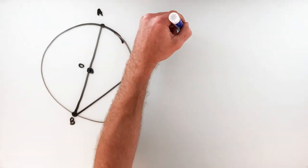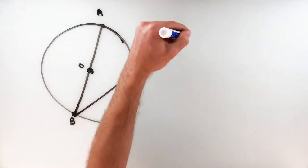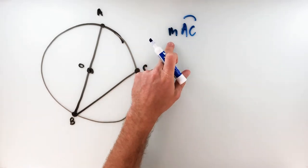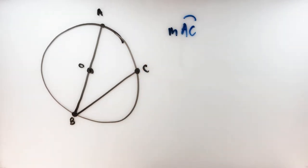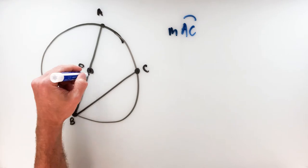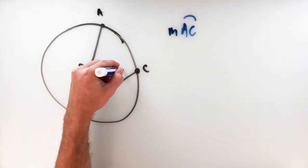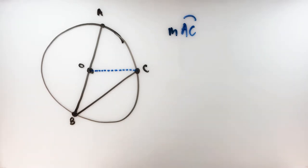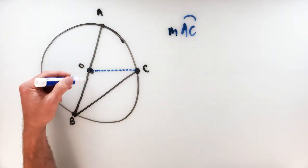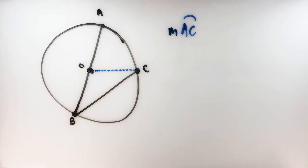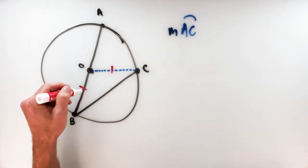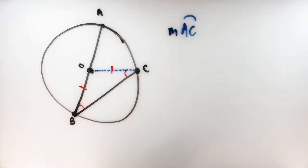The measure of arc AC — the first thing we're going to do is create a little triangle by drawing another radius from O to C. That goes from the center to the edge of the circle. What we've done is create triangle OBC, and because radii are congruent, those two sides are the same — making it an isosceles triangle. In an isosceles triangle, not only are the two sides the same, but you also have two base angles that are the same. We need to keep that in mind.